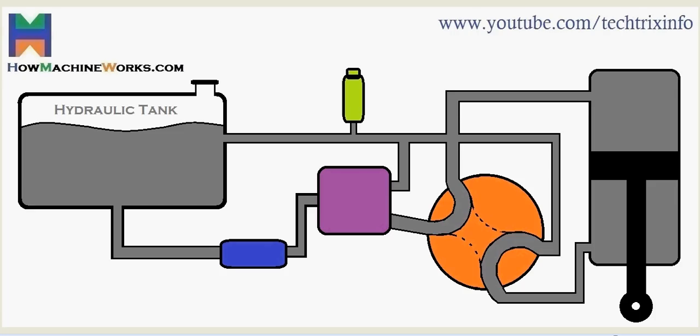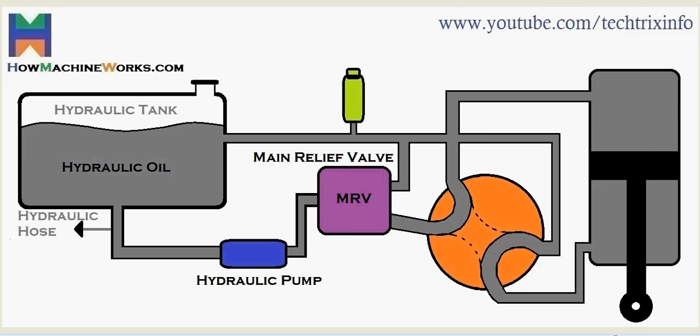That's the hydraulic tank over there. That's the hydraulic oil stored inside the hydraulic tank. There we have the hydraulic hose which connects towards different components. That's the hydraulic pump and that's the main relief valve over there. You can see the manually activated valve block lever there.